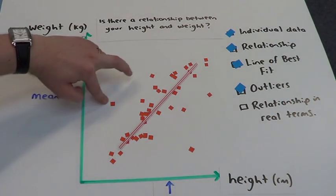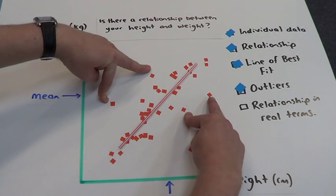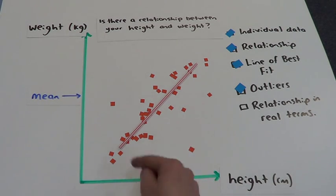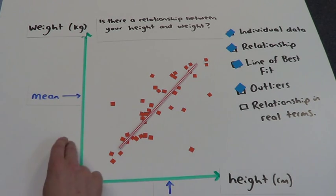Potentially we could make a case that these ones here could be identified as outliers. This one here definitely. When you identify an outlier, give the measurements. So if the test said identify the outlier, I'd say that person was 190 centimeters tall and weighed 50 kilograms.